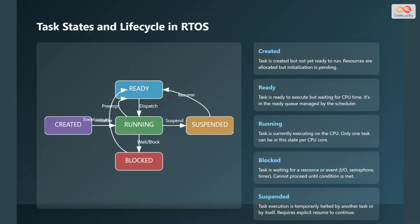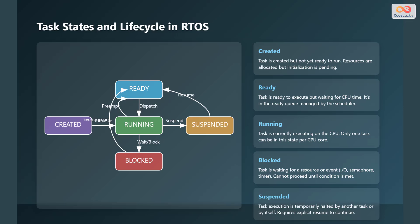Let's explore the different states a task can be in during its lifecycle within an RTOS. There are five primary states. First, created: the task is created but not yet ready to run — resources are allocated, but initialization is pending. Next is ready: the task is ready to execute but is waiting for its turn to use the CPU. It sits in a ready queue managed by the scheduler.